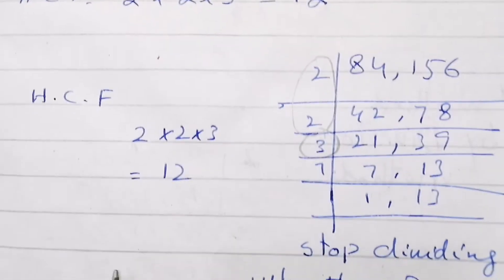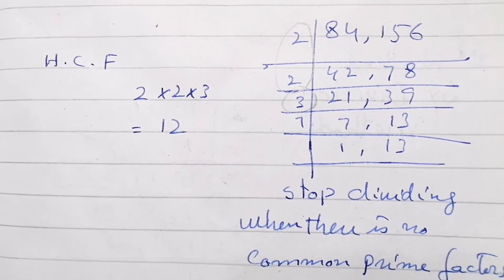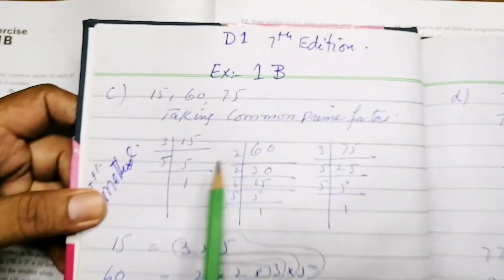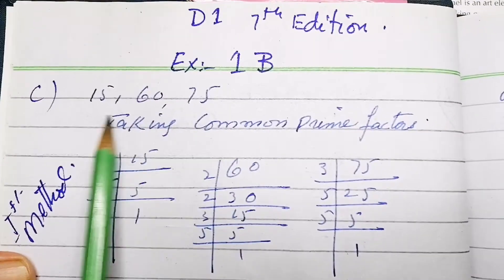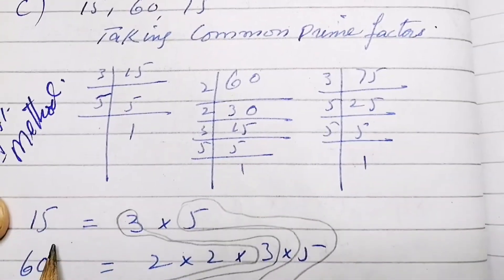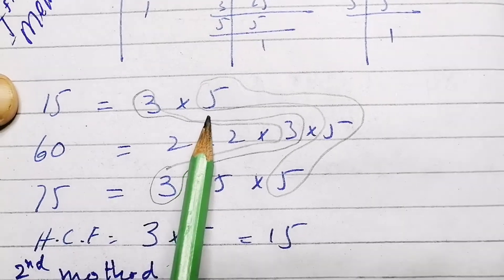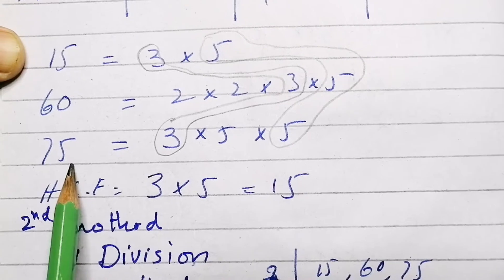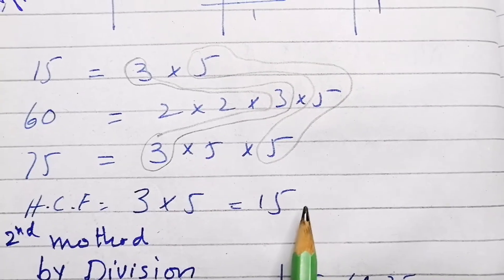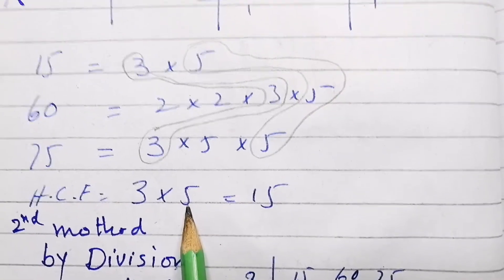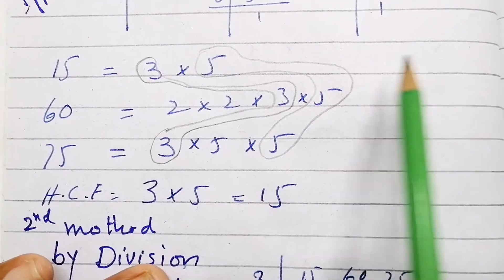For part C, 15, 60, and 75 are given. Taking their prime factors separately: 15 = 3 × 5, 60 = 2 × 2 × 3 × 5, and 75 = 3 × 5 × 5. The common factors are 3 and 5, so HCF = 15.